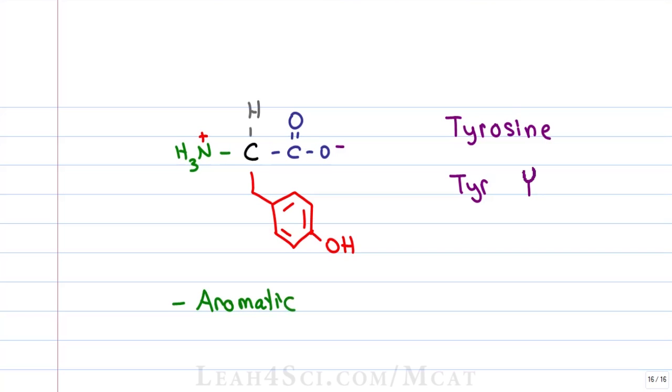As with serine and threonine, the fact that we have an OH means that tyrosine can participate in reversible temporary bonding and phosphorylation of a molecule.